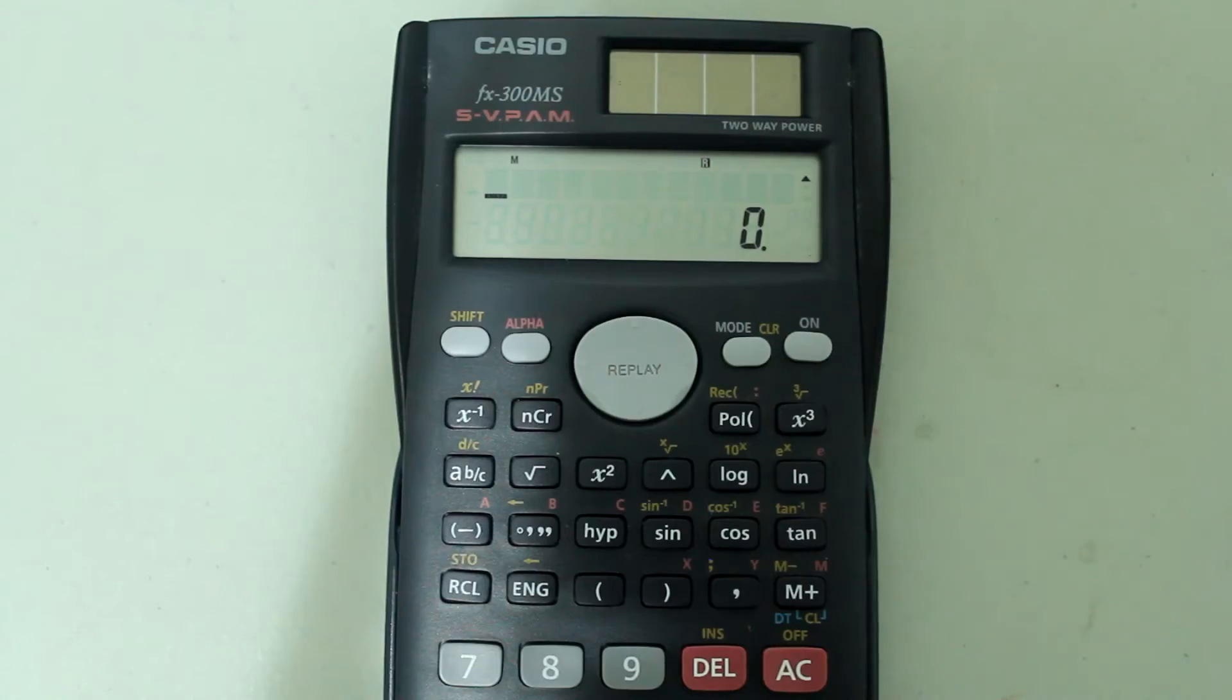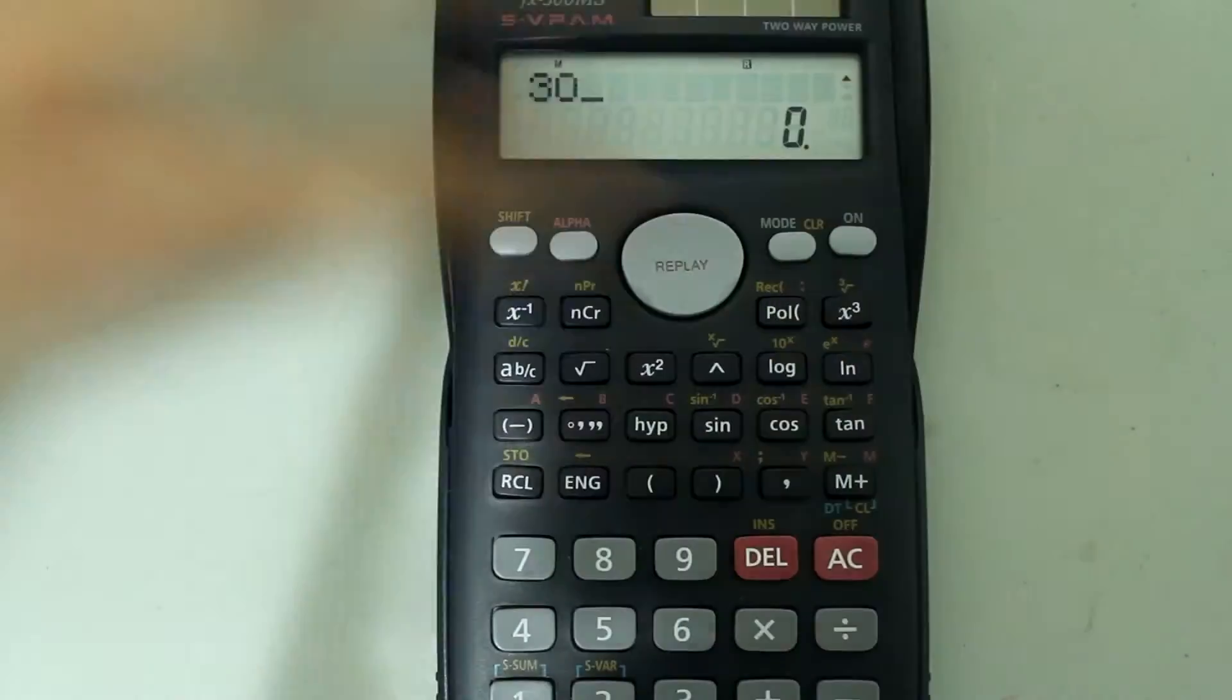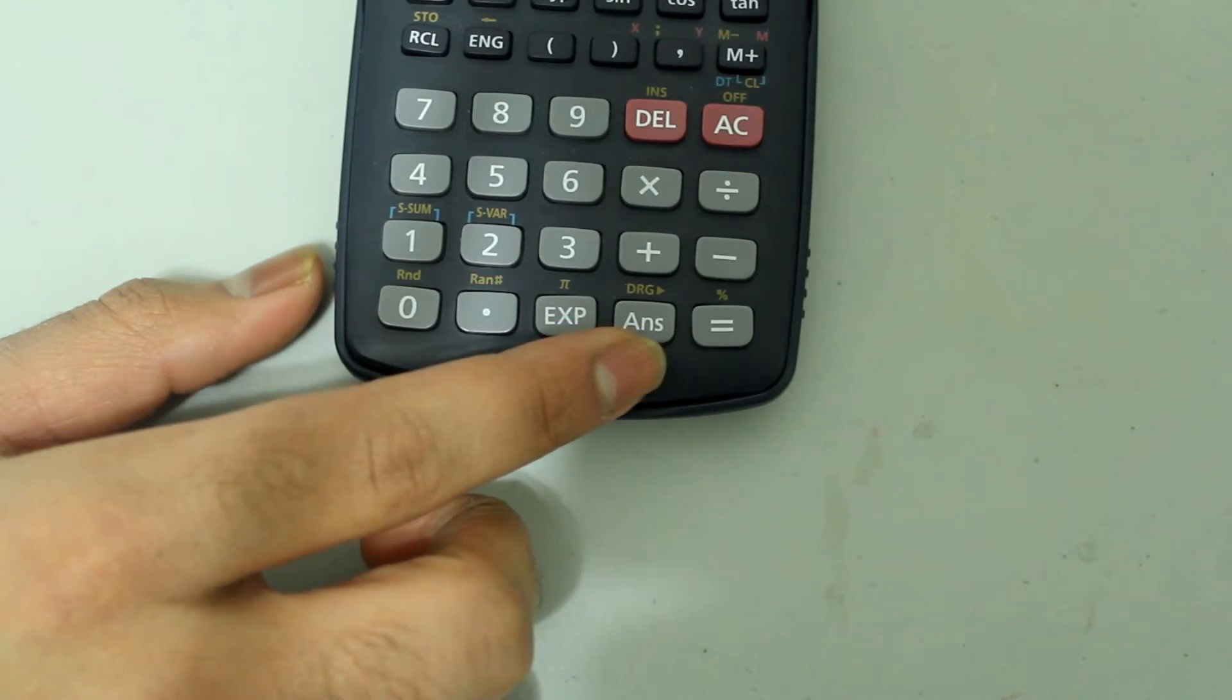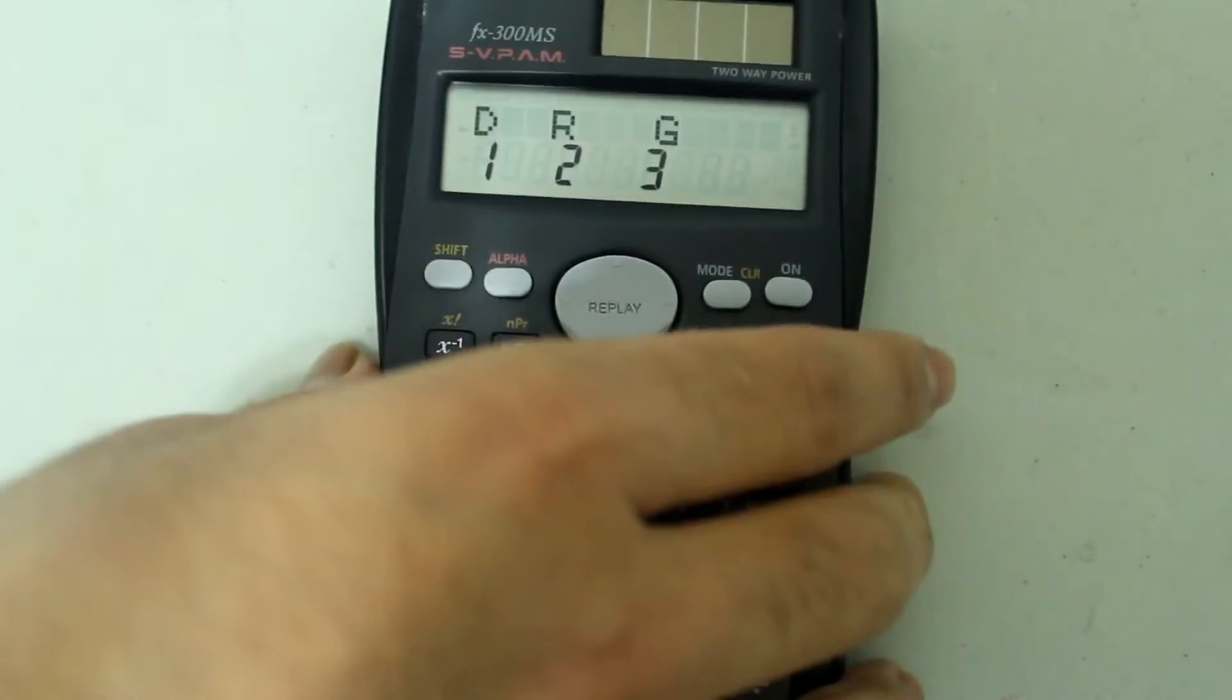Next what we are going to do is type in 30, and afterwards we are going to press the shift button, and we are going to press the answers button that has DRG labeled on top, and this screen comes up.